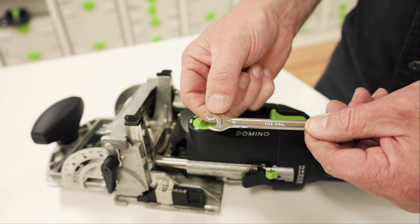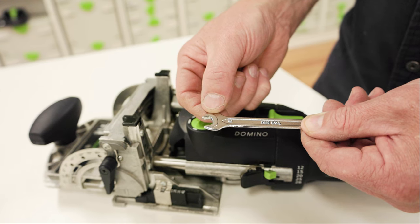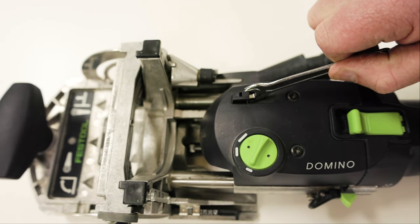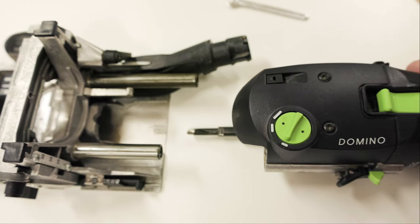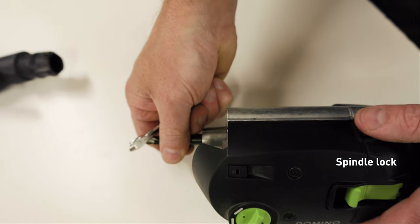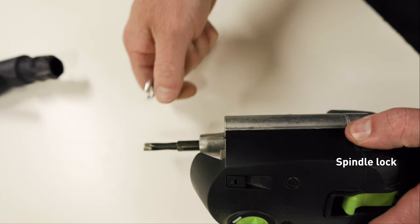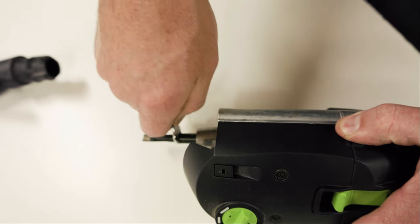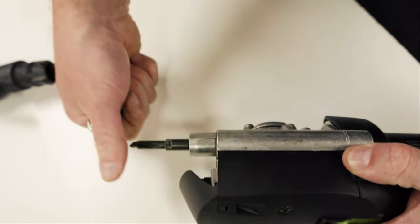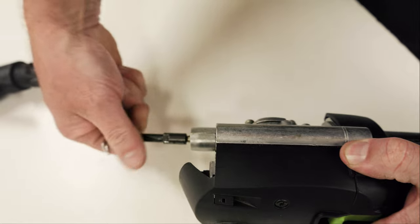To change the mortising bit, use the provided 8mm wrench, pry up the fence body release lever and slide the fence body off the motor housing. Press and hold the spindle lock button. This stops the spindle from turning while you loosen the mortising bit. Loosen the mortising bit by turning it counter clockwise. This is a standard right hand thread.